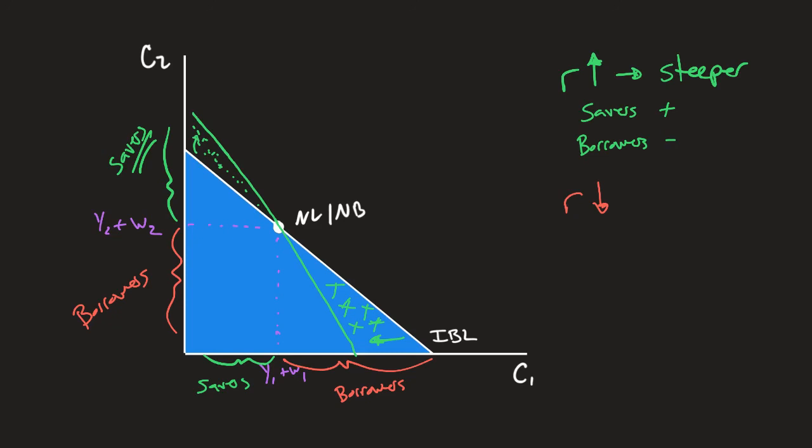So that means that savers are worse off. There's less combinations available, but borrowers are better off. So we see it coming back here. There's a bunch of new places for borrowers.